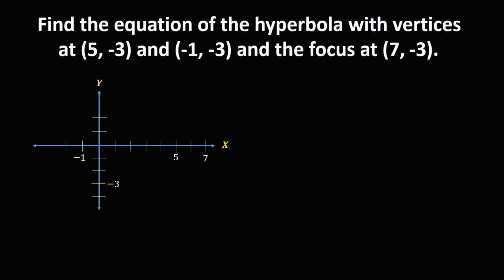So first, we need to graph our hyperbola using the given coordinates. So vertices, we have 5 and negative 3, and the other one, that's negative 1 and negative 3. Then for the focus, 7 and negative 3.